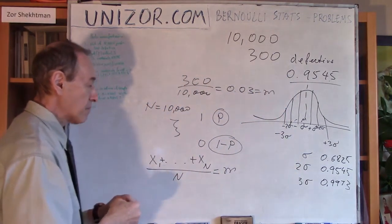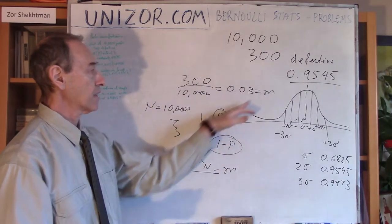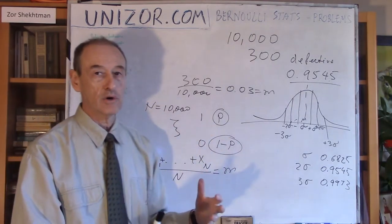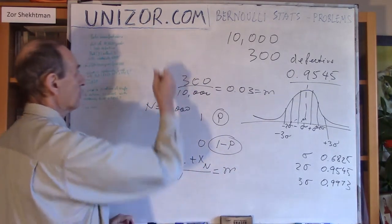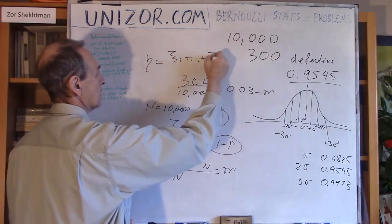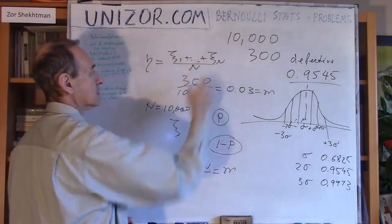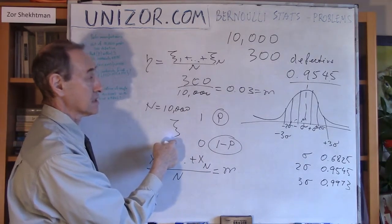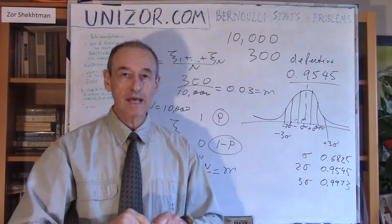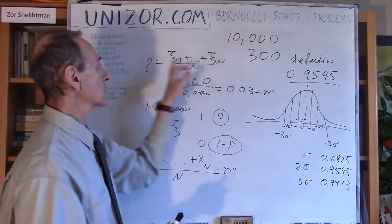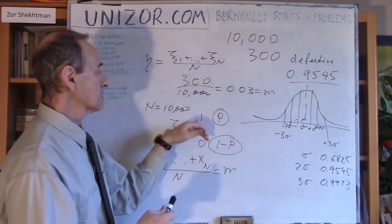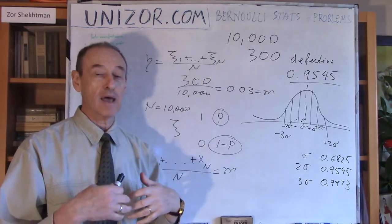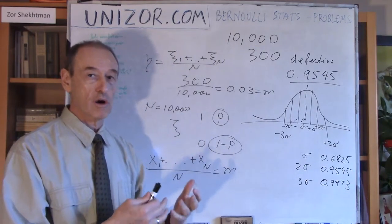If I make another series of n experiments, I would get another number. This is actually a single value of a random variable eta, which equals (x₁ + x₂ + … + xₙ) / n, where every xᵢ is identically distributed as xi and they are all independent — each representing an individual experiment. So I have 10,000 random variables, each 1 with probability p and 0 with probability 1 − p, and their sum divided by n is a probabilistic picture of what I have done.